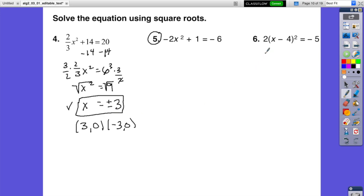Okay, now let's skip to number 6. Again, we have to get the x by itself. And since it's a square root, we'll solve it by using square roots. We're going to divide both sides by 2. Move it over here. x minus 4 quantity squared equals negative 5 over 2.